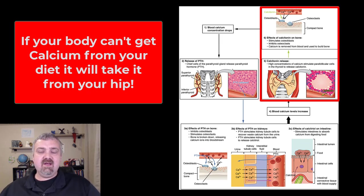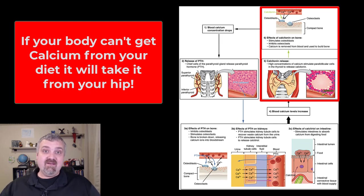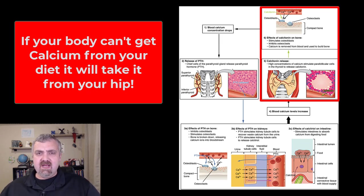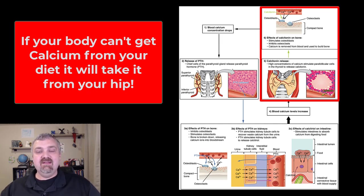Maintaining blood calcium levels is very important. Calcium is needed every time a nerve signal is transmitted — it causes the release of neurotransmitters. It's needed every time a muscle contracts; your thin and thick filaments can't work without calcium. It's needed for buffering pH and keeping you from an acid-base disturbance. As far as your body is concerned, keeping strong healthy bones 30, 40, 60 years from now is a luxury. Your body needs to keep enough calcium in your blood to keep you living today — keeping your heart beating and those kinds of things.